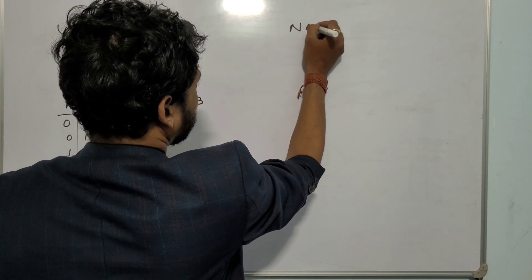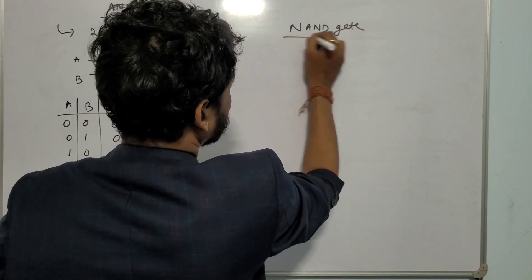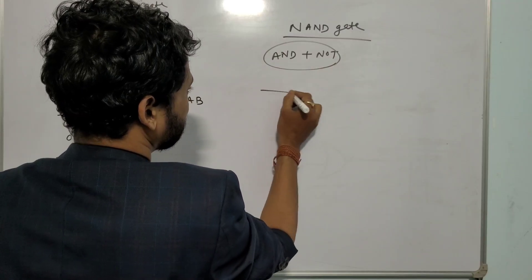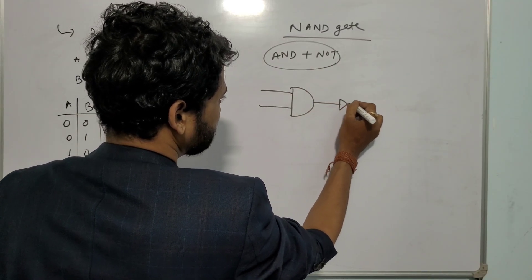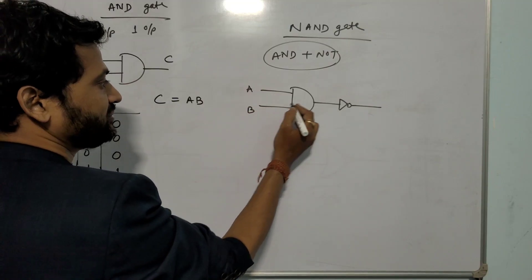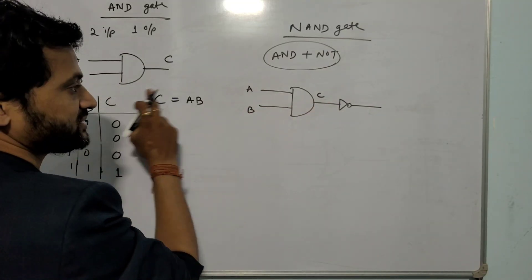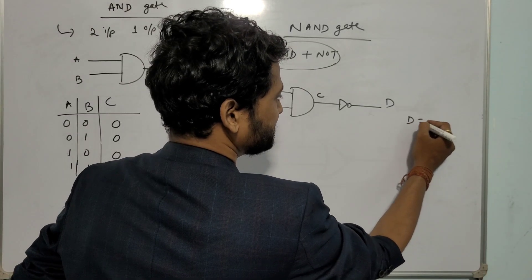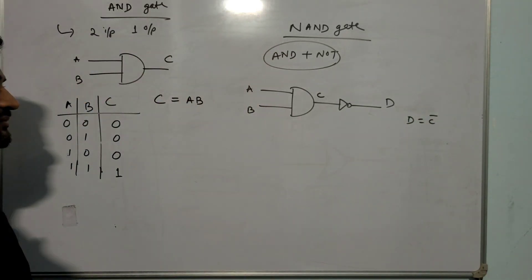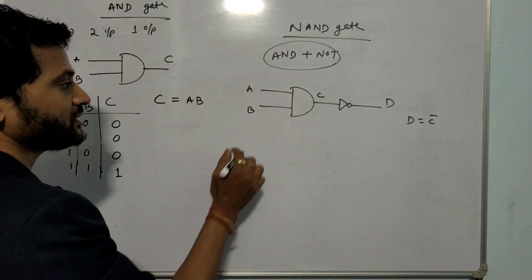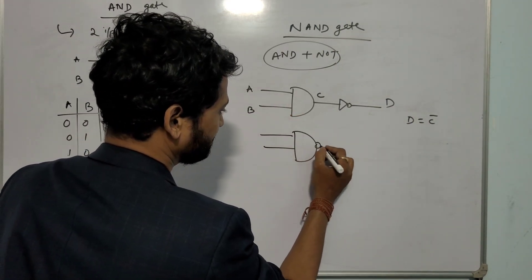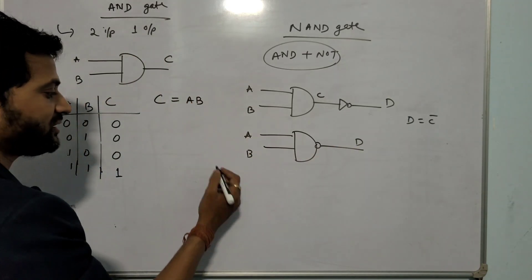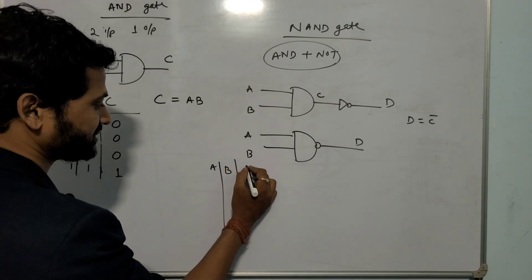Next is the NAND gate. The NAND gate is AND gate plus NOT gate. Input A and B give AND output C, and after connecting a NOT gate the final output is D, where D equals C bar. The combined symbol shows inputs A and B with final output D. The truth table: AND output was 0, 0, 0, 1; so NAND output D is the inverse: 1, 1, 1, 0.